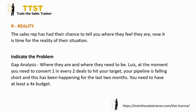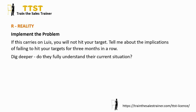'Lewis, at the moment you need to convert one in every two deals to hit your target. Your pipeline is falling short, and this has been happening for the last two months. You need to have at least four times budget.' The wording of this part is very important. Cultures are different, training managers are different, expectations are different, but you really need to implement the problem. 'If this carries on, Lewis, you will not hit your target. Tell me about the implications of failing to hit your targets for three months in a row.' Dig deeper — did they fully understand their current situation? Give the Sales Consultant time to sit and think about the implications. Remember, we're here to help and to get them out of that situation and move them forward.